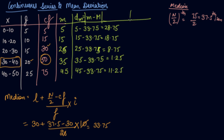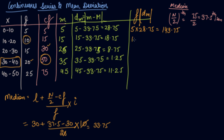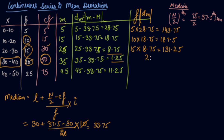Now we multiply the frequency with the deviation. Frequency 5 into 28.75 equals 143.75. Then frequency 10 into 18.75 gives 187.5. Then frequency 15 and the corresponding deviation 8.75 gives 131.25. Then 1 into 20 is 25, and we got 281.25. Adding all these, we get the answer 768.75.